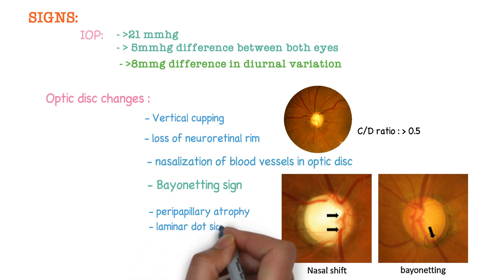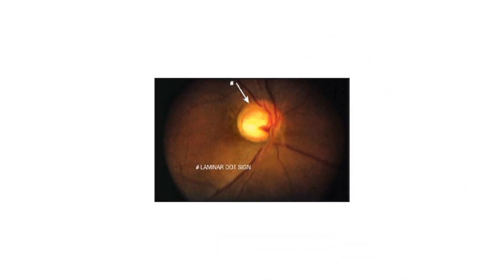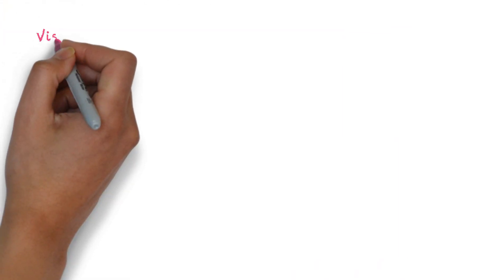There is peripapillary atrophy, and one can see the laminar dot sign. Continued deepening of the cup causes exposure of the underlying lamina cribrosa, which is often recognized by gray fenestrations. It can be seen on direct ophthalmoscopy as gray dots, referred to as the laminar dot sign.